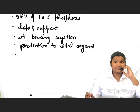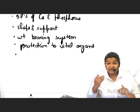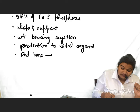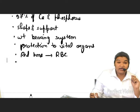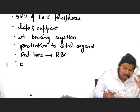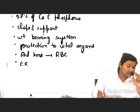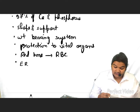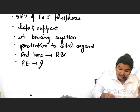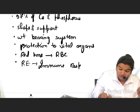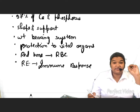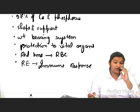The red bone marrow present in the bones is the factory for producing red blood cells. Also, the reticuloendothelial system present in the bone helps in the immune response of the body. And as we have seen, 97% of whole body calcium and phosphorus is stored in the bone.